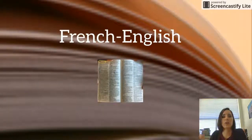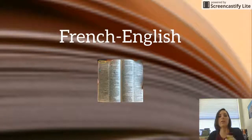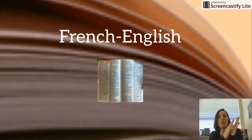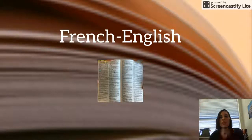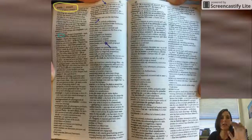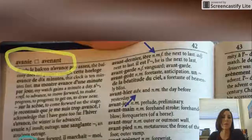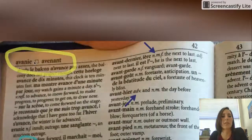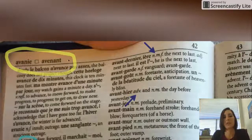Next we're going to go from French to English. If you have a word in French and you want the English definition, you flip to the other side of the dictionary. You know which side you're on by looking at the corner and seeing French words — 'avant' and 'avançon' are not English words, so you're on the French-to-English side.